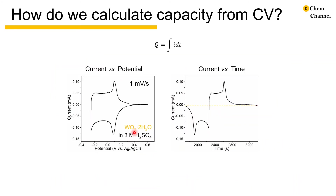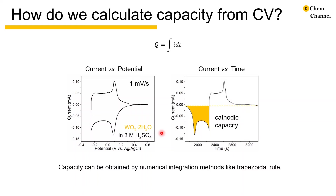Capacity is defined as the integral of current over time. Therefore, to obtain this value, instead of plotting current as a function of potential — which is typically what we see in cyclic voltammograms — we plot current as a function of time. We can obtain capacity by calculating the area underneath the curve using numerical integration methods like the trapezoidal rule.